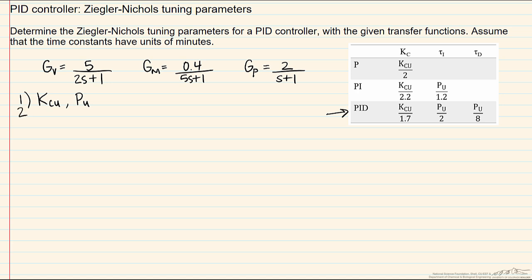In the continuous cycling method you are running your controller as only a P-only controller, and your goal is to get a response that is undamped. However, if transfer functions are known, if we can model the process, the valve, and the sensor transmitter with good accuracy...